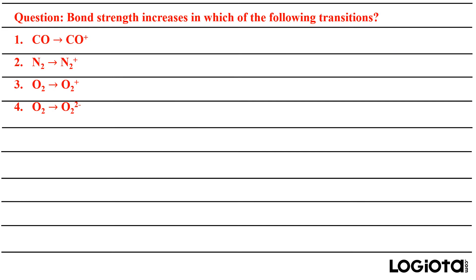Now, the question mentions bond strength — bond order is directly proportional to bond strength. More bonds means more energy is required to break them, so single bond < double bond < triple bond in strength. Bond order is also inversely proportional to bond length, so a single bond has the longest bond length and a triple bond has the shortest.